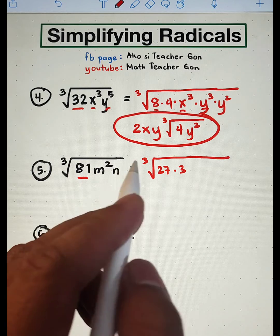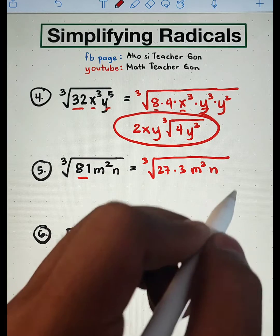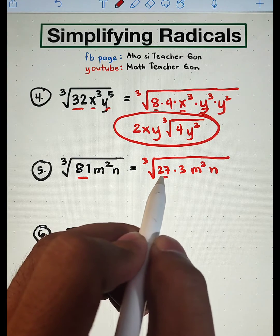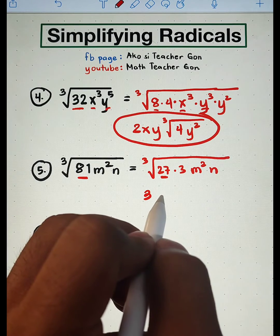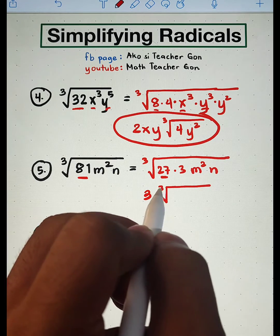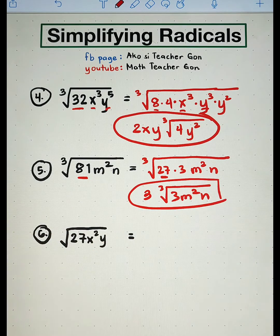So that is m squared n. Extract this. The cube root of 27 is 3. Then copy this expression. Times the cube root of 3 m squared n. And this is the answer.